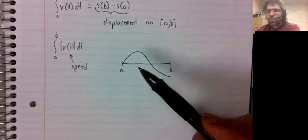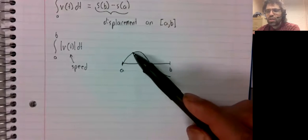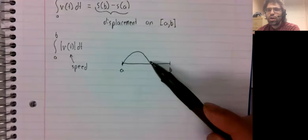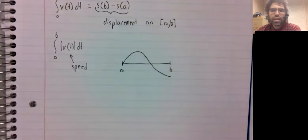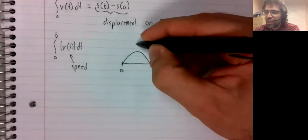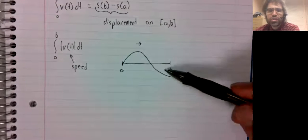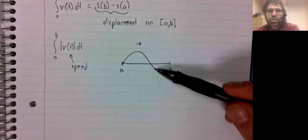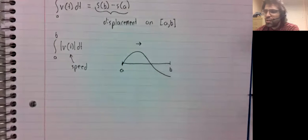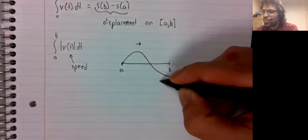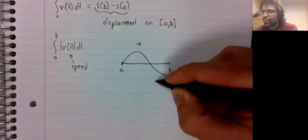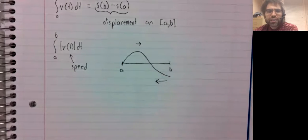Remember how this works: when the velocity is positive, the object is moving in a positive direction, let's say to the right. And then when the velocity is negative, the object is moving in the other direction.